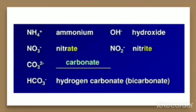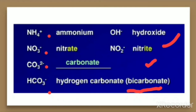The common polyatomic ions include: ammonium ion NH₄⁺, nitrate ion NO₃⁻, carbonate ion CO₃²⁻, hydrogen carbonate (also called bicarbonate) HCO₃⁻, hydroxide ion OH⁻, and nitrite ion NO₂⁻. These are some common examples of polyatomic ions which are also given in the textbook table.